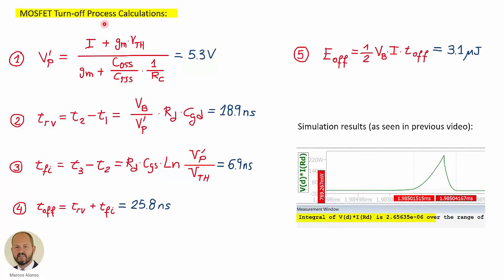For the turn-off process we follow the same procedure. We first calculate the Miller plateau voltage — using this equation we get 5.3 volts. The time interval during which the voltage is increasing gives 18.9 nanoseconds. The time interval during which the current is falling gives 6.9 nanoseconds. So the total off-time is 25.8 nanoseconds, and with this we calculate the turn-off losses and get 3.1 microjoules. From the simulation results, as seen in the previous video, we get 2.65 microjoules — also quite similar.